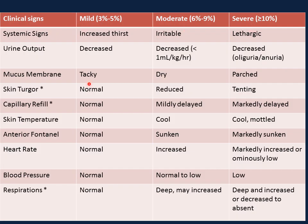Children with mild dehydration are clinically stable. They may present with increased thirst, decreased urine output, and tacky or sticky mucous membranes. In moderate dehydration, the child is irritable with decreased urine output to less than 1 ml per kg per hour. The mucous membrane is dry, skin turgor is reduced, capillary fill is mildly delayed, skin temperature is cool, the anterior fontanel is sunken, heart rate is increased, blood pressure is normal to low, and respirations are deep or increased.